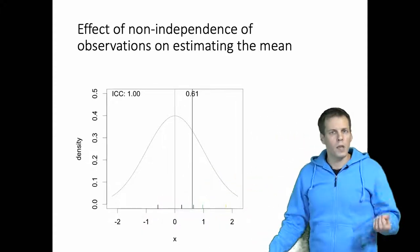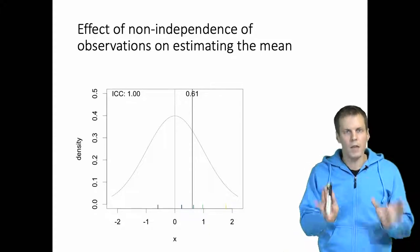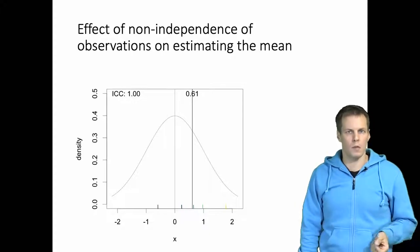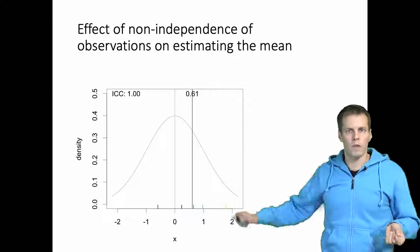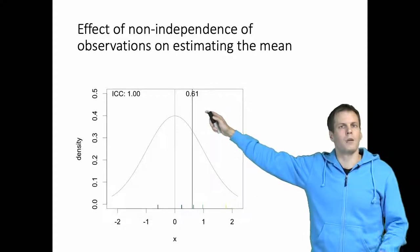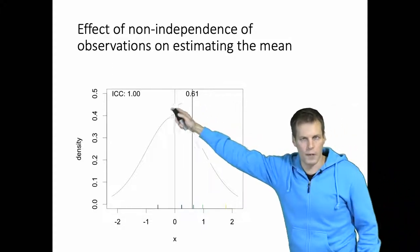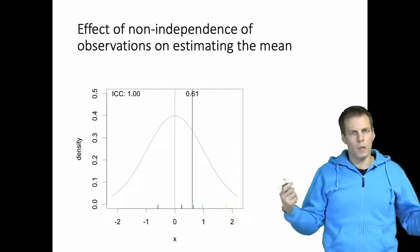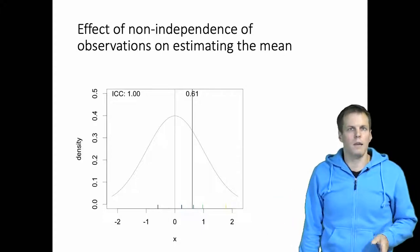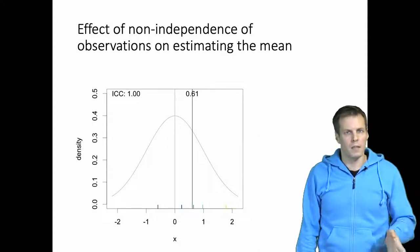When we increase the intraclass correlation of these data — maintaining the variance of the data — we can see that the estimate of the mean, or the sample mean, becomes less and less accurate as an estimator of the population mean. Originally, with 100 independent observations, our estimate was 0.08, and after strongly clustering the data it's 0.61.